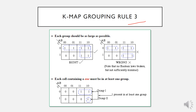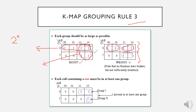The next rule is that each group should be as large as possible. When grouping ones in the K-map, we try to make groups as large as possible while following the two-to-the-power-of-n rule. In this case, we can group to a maximum of four, and the other group is four as well. Note that redundant overlap between cells is allowed as long as it helps us cover the largest possible group.